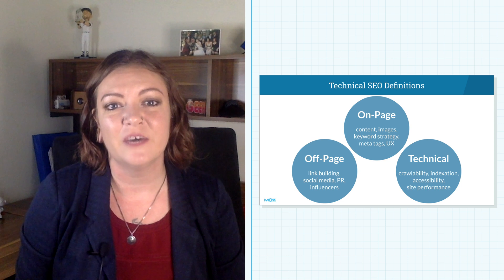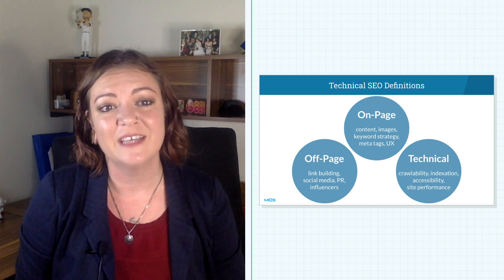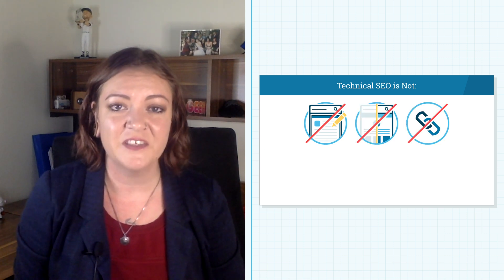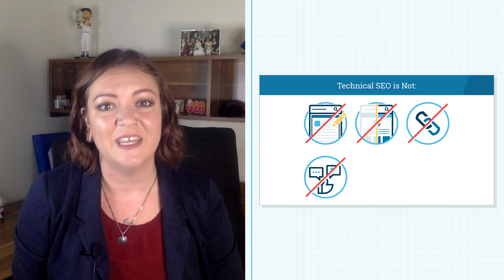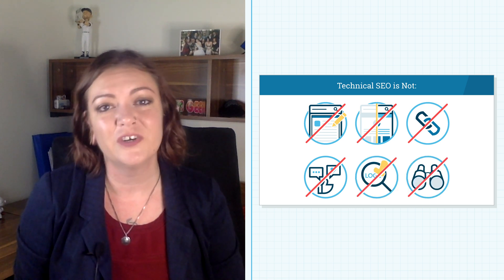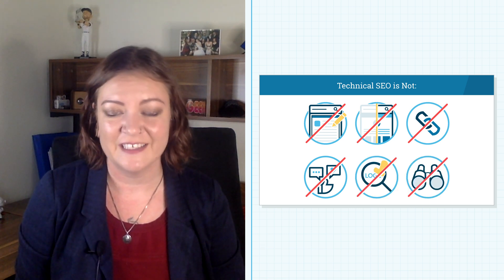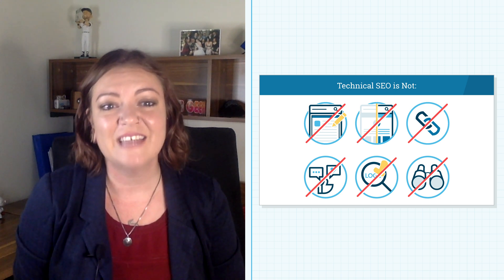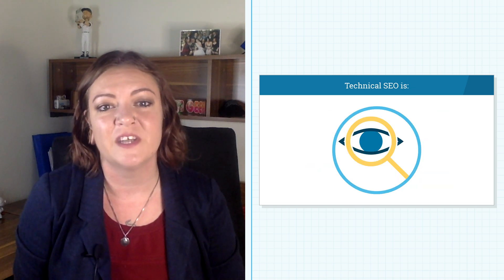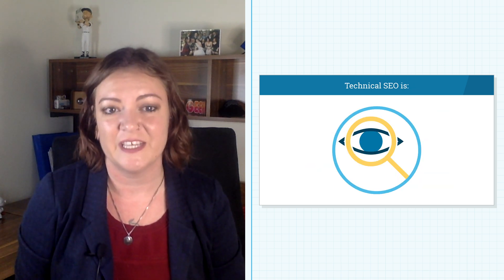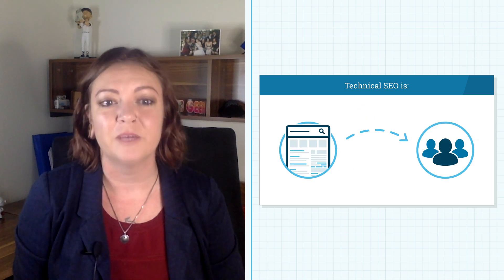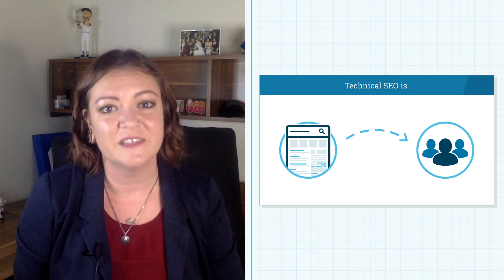While technical SEO ensures that your content can be found and easily consumed, it generally doesn't include content development, on-page optimization, external link building, social media, branding, or traditional customer and competitor analysis. Instead, technical SEO is focused on enabling a comprehensive understanding of your website by the search engines and the appropriate delivery of your pages to your users.